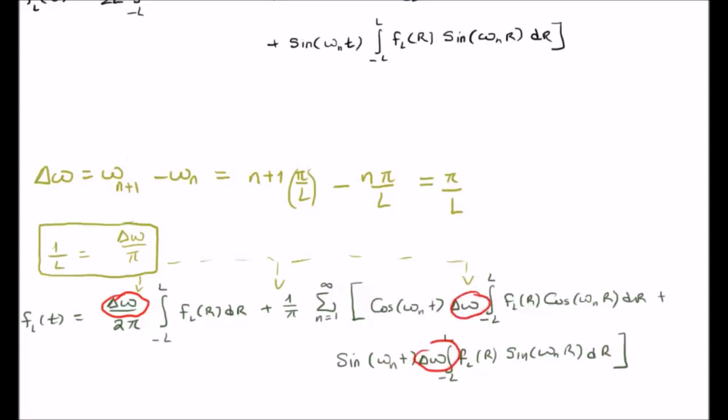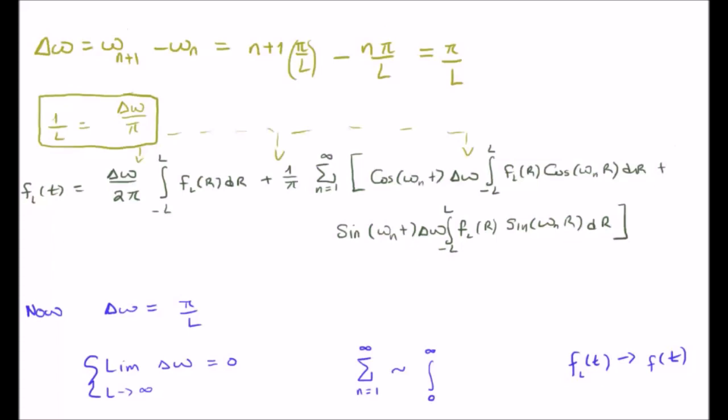Now, I'm sure you've seen Riemann sums in the past, and I'm also sure that you'll see where this is going. So just like the definition or the derivation of the integrals from the Riemann sums, we look at the limit of delta omega as l goes to infinity.